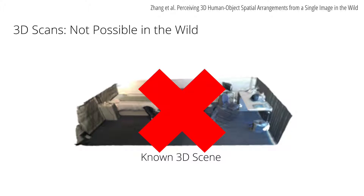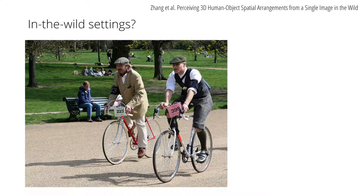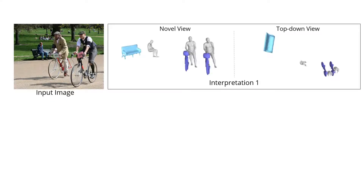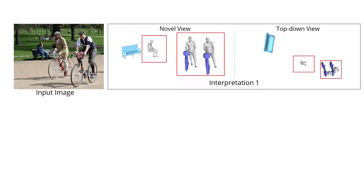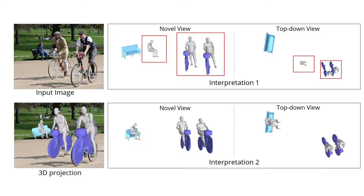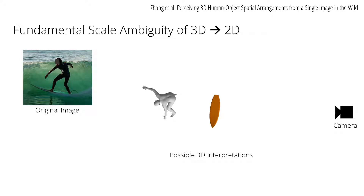In this work, we attempt to reconstruct 3D humans and objects in the wild without 3D scans. This is challenging because there are multiple 2D explanations for a 3D scene. Consider this picture of people enjoying a park pre-COVID-19. Without understanding human-object interaction, one possible interpretation might look like this — even though the sizes of objects are reasonable, people shouldn't be floating in the air. The problem is that this interpretation has almost the same 2D projection as a more plausible one. This fundamental scale ambiguity is challenging to resolve in general. For example, a small surfboard close to the camera and a larger surfboard further away project to the same 2D image.